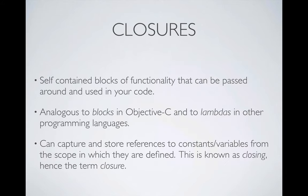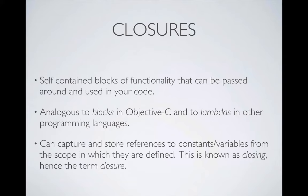First, closures. Closures are self-contained blocks of functionality that can be passed around and used in your code. In other words, we can bundle up code and treat it like data, pass it around just like we would a reference to data. Closures in Swift are analogous to blocks in Objective-C or lambdas in other programming languages. The interesting thing about closures is that they can capture and store references to any constants or variables defined within the current scope — capturing the context in which they are created. This term is known as closing, hence the terminology closure.